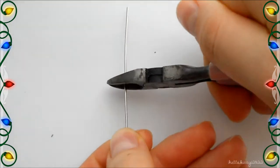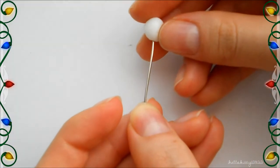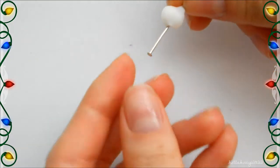I'm also going to take a head pin and cut that in half, making sure to save that piece also. Now I'm going to stick my cold porcelain through the head pin.